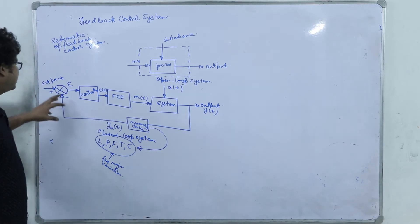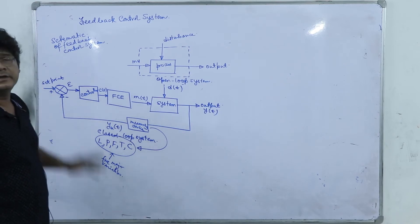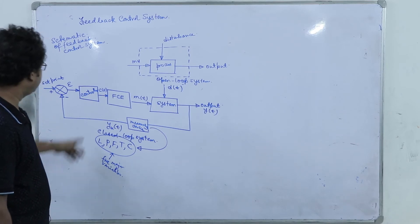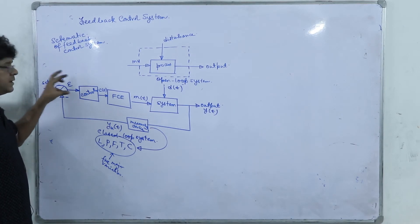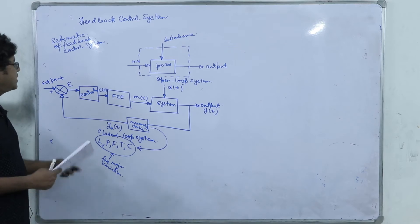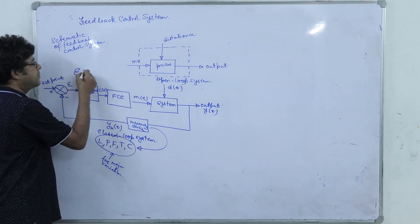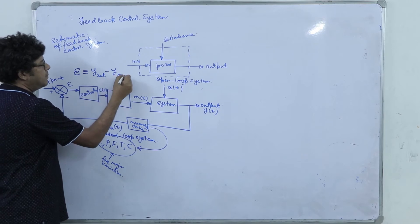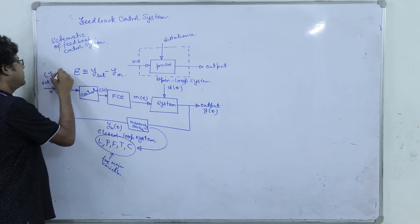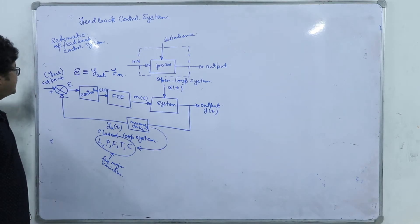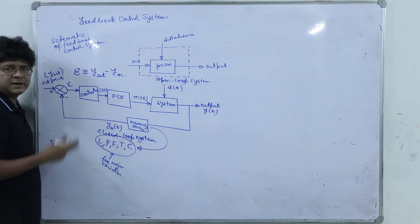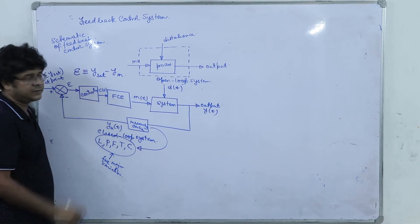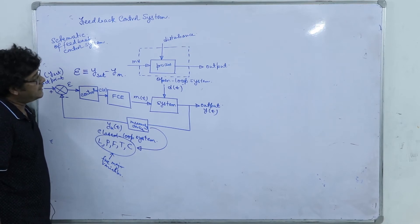From the measuring device, the output is commonly an electronic signal varying in the range of 4 to 20 milliamperes. This goes to the comparator, which generates the error. By definition, error = y_set minus y_m. The comparator is an integral part of the controller. The controller generates another electronic signal C(t), which goes to the final control element.